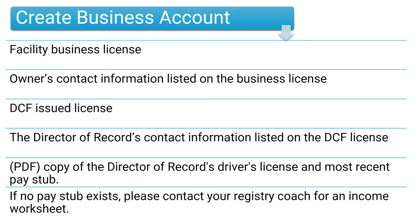For a quicker, easier process, gather these documents before getting started: business license and owner's contact information listed on the business license, DCF issued license and contact information for the director of record listed on the DCF license, and a PDF copy of the director of record's driver's license and most recent pay stub. If no pay stub exists, please contact the Miami Registry team for an income worksheet.